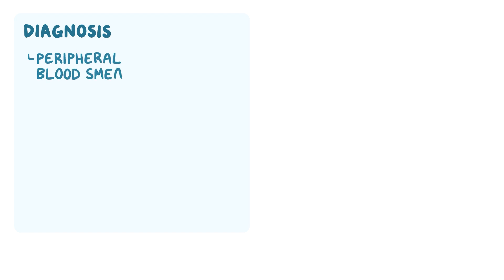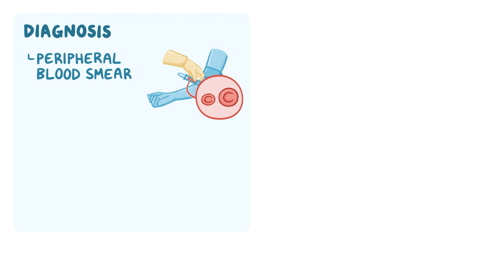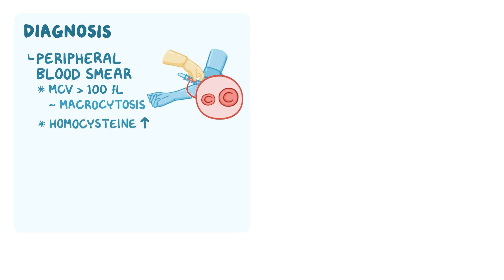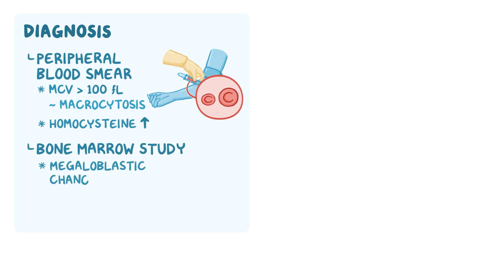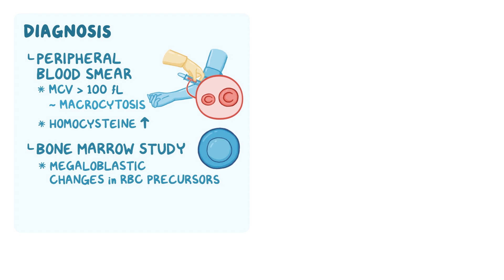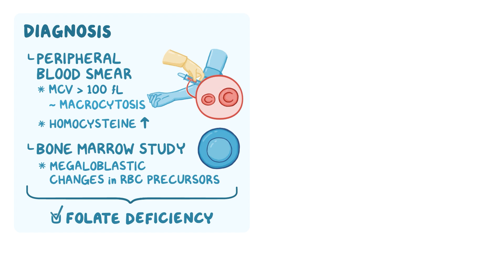Diagnosis of folate deficiency relies on a peripheral blood smear, which shows large red blood cells. On a blood sample, a mean corpuscular volume or MCV larger than 100 femtoliters suggests macrocytosis. Homocysteine level is also elevated. A bone marrow study can also be done to look for the megaloblastic changes in red blood cell precursors at various stages of differentiation. After confirming that there is folate deficiency, the cause should be found.